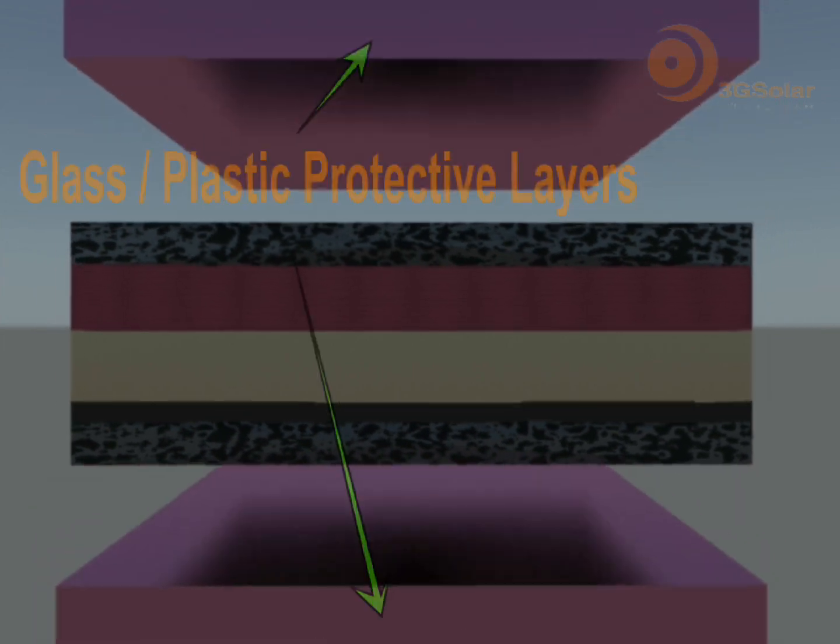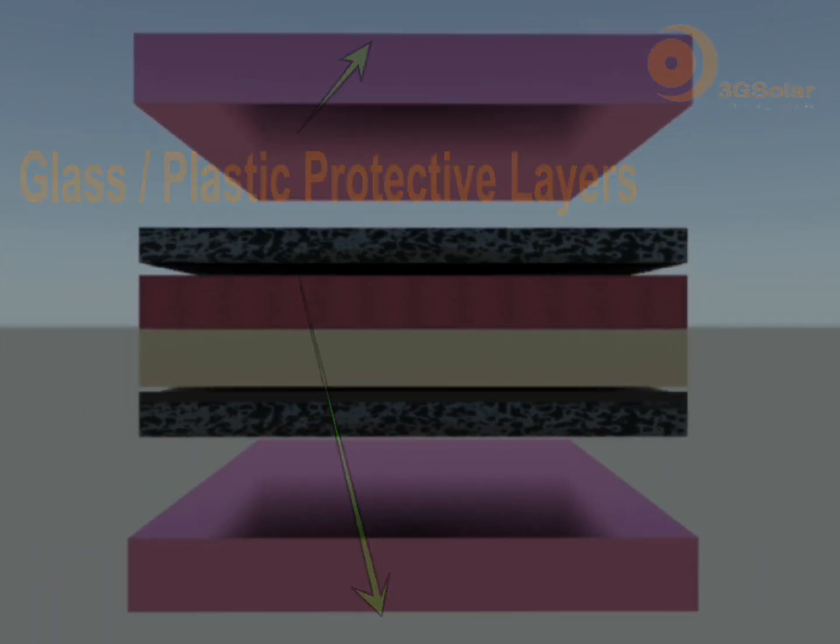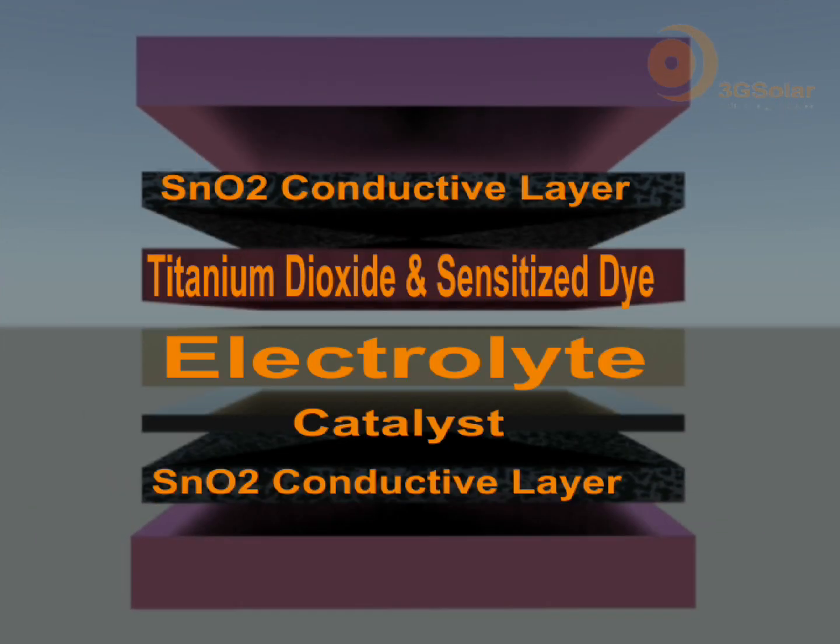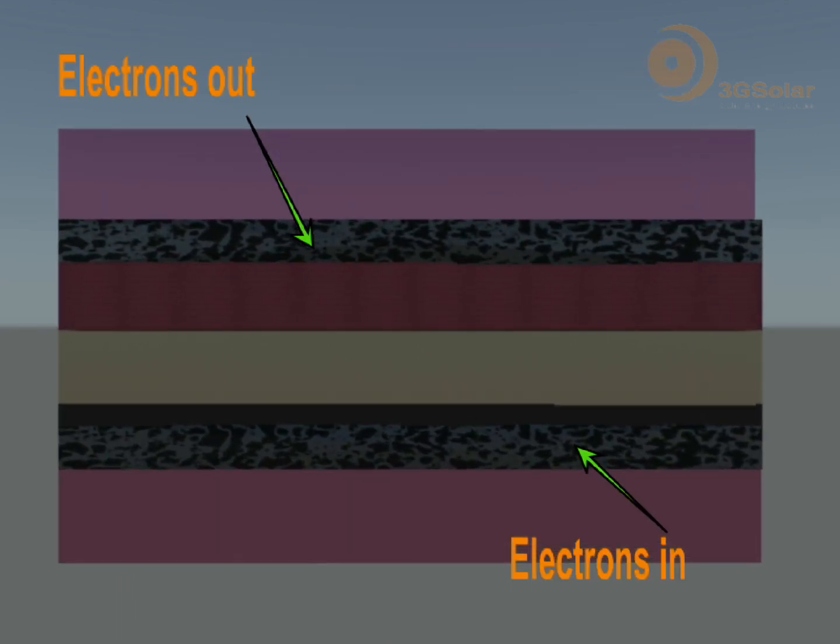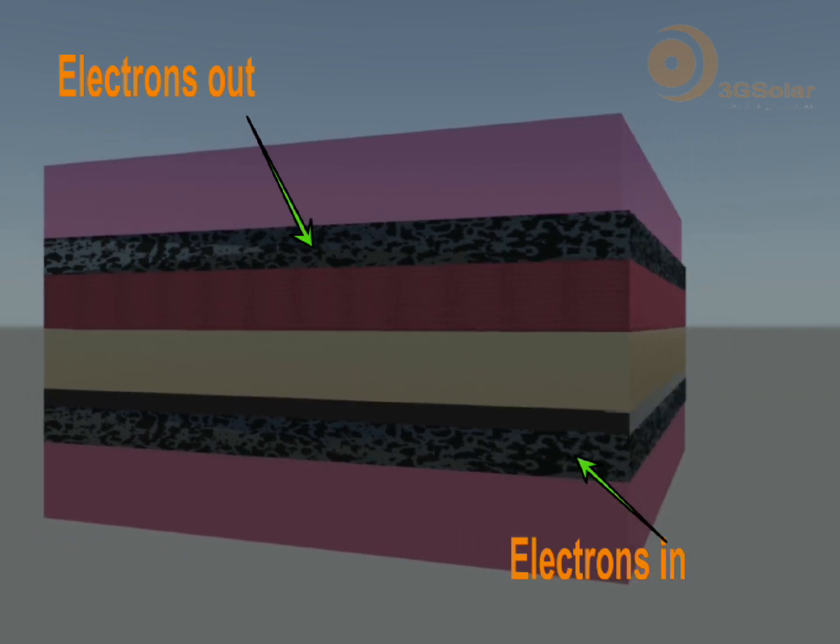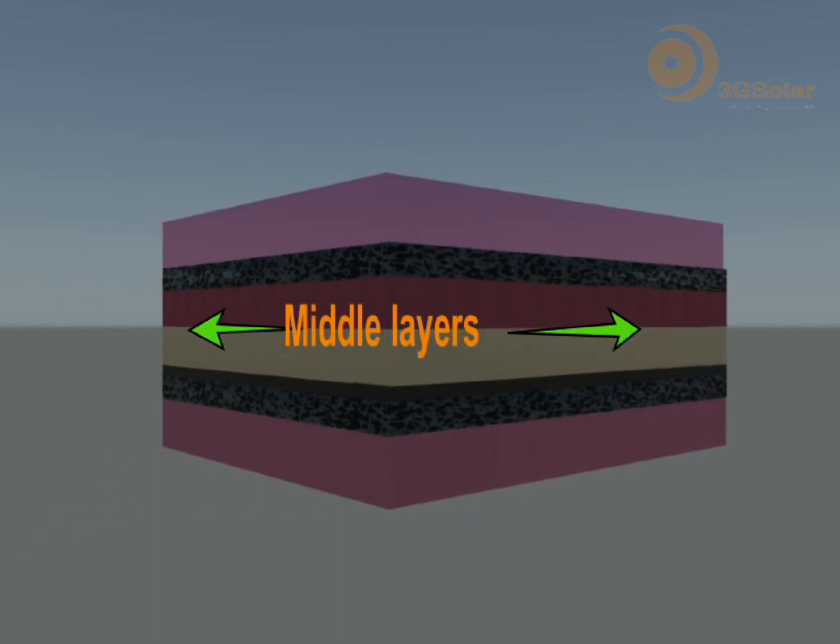The top and bottom layers are protective glass with conducting coatings. Electricity in the form of electrons flows in and out of these conductive coatings while the electrical production process happens in the middle layers.